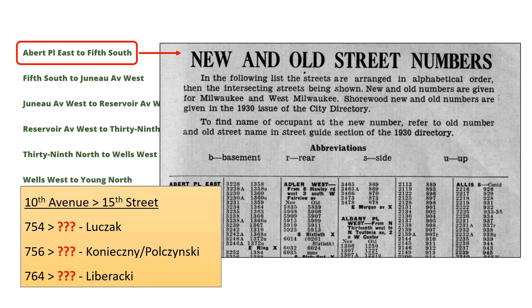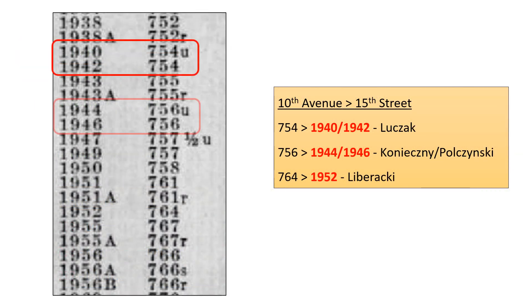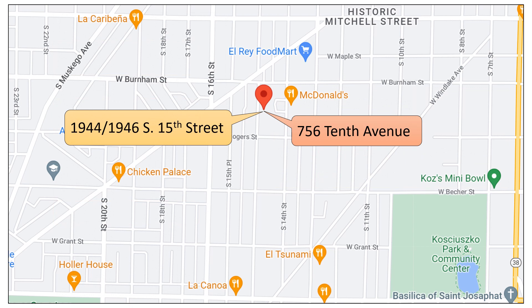With the assistance of a very helpful researcher at the Historical Society, we scroll down this sheet to find the address conversions we are looking for. With these modern addresses along 15th Street, we can now consult a modern map to find where these folks lived. Here we are back on the modern Google map, showing the location of the Konieczny-Polczynski residence in 1930. This house is right in the middle of the old Polish district of Milwaukee, so it seems to be right where we'd expect it to be.